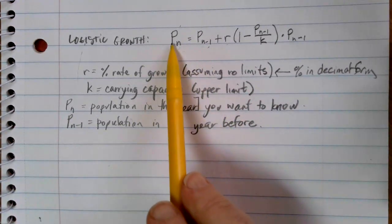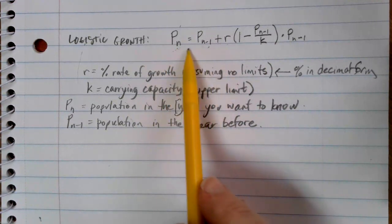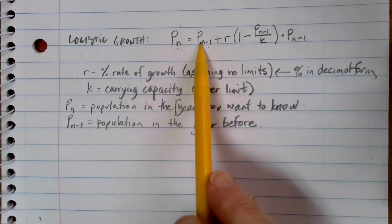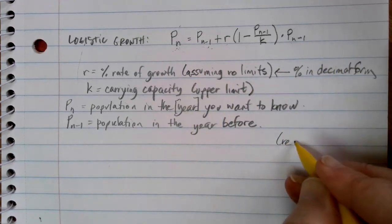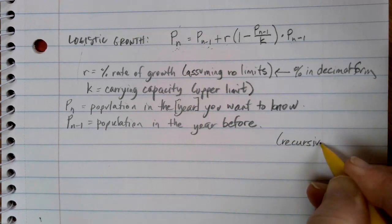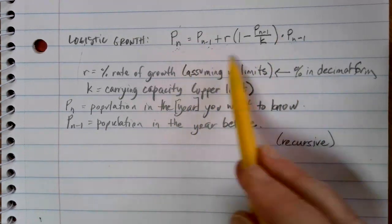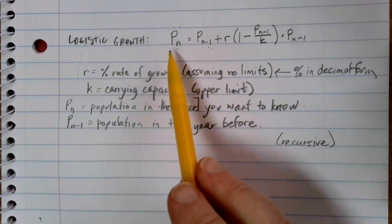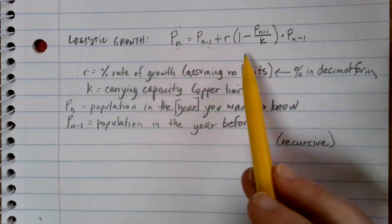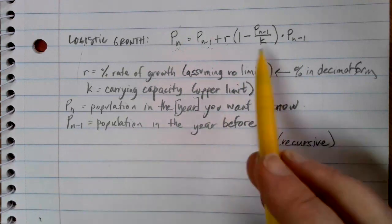So what does this mean? If I want to know what the population in the fifth year is, my calculation involves knowing what the population in the fourth year is. This is called a recursive type of a formula, because what we have to do is we have to find one answer, use it in the formula to get the next answer, and then I can use that answer in the formula again.